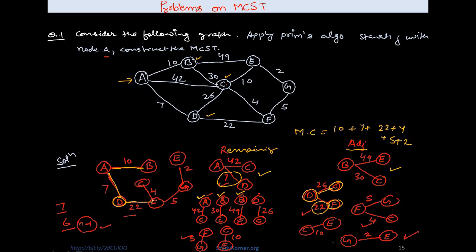I draw edge D to F in the spanning tree and update the remaining set. D to C is added to the remaining set. The adjacent vertices of F are C, D, and G. Since D is already considered, I include only G and C. Between these two edges, F to C has the minimum cost, so I consider F to C in the spanning tree. F to G is added to the remaining set.